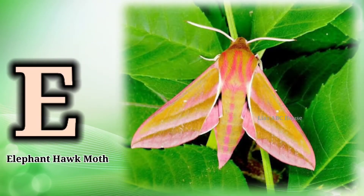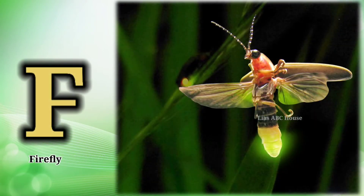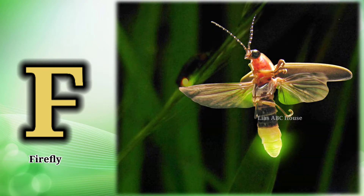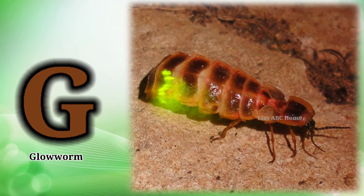E is for Elephant Hawk Moth. F is for Firefly. G is for Lower.